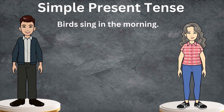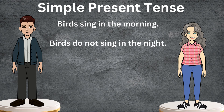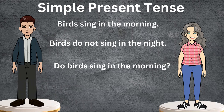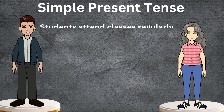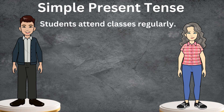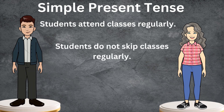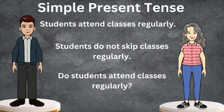Here is another one: birds sing in the morning. We can make the negative sentence as: birds do not sing in the night. Or: do birds sing in the morning? Our next sentence is: students attend classes regularly. The negative sentence would be: students do not skip classes regularly. Or the interrogative one is: do students attend classes regularly?